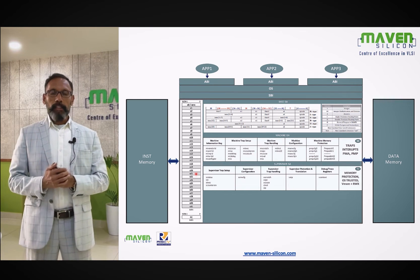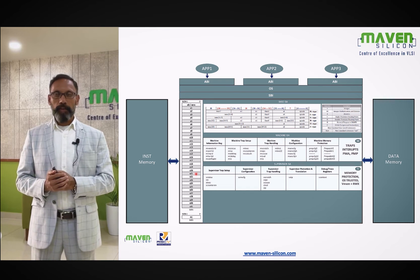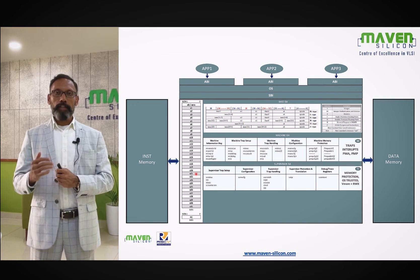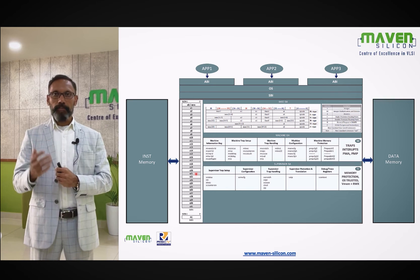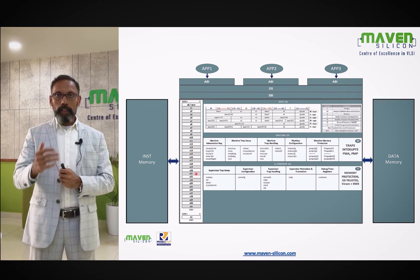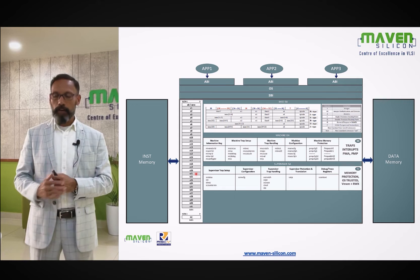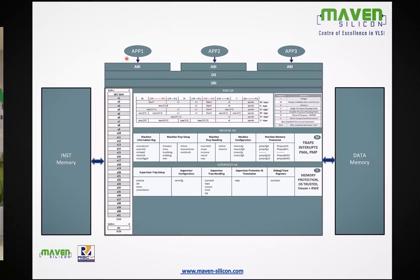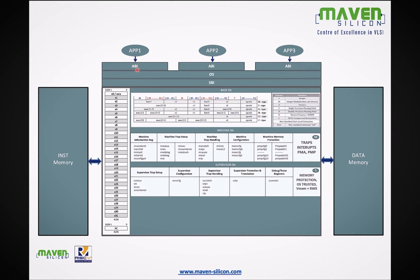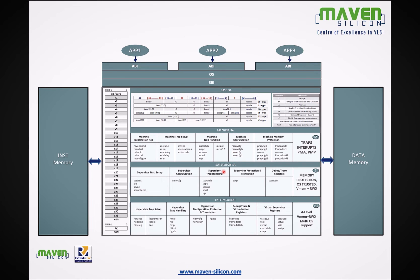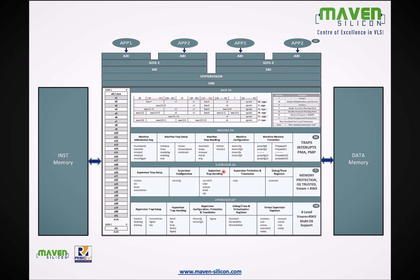RISC-V provides an interface called SBI — Supervisor Binary Interface. It provides the interface for the operating system and necessary function calls to interface with the SEE — Supervisor Execution Environment. Each application uses ABI to interface with the operating system, and the operating system uses SBI to interface with the SEE, which includes User Level ISA, Machine ISA, and Supervisor ISA.